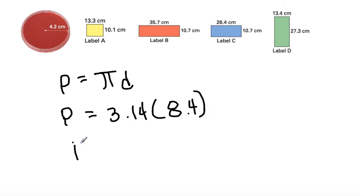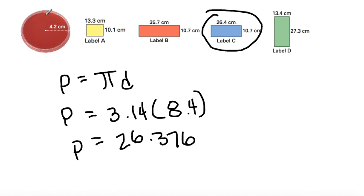So now we bust out my handy-dandy calculator. 3.14 times 8.4 equals 26.376 or 26.4. So what is the label that can be used for this top right here? Label C. 26.4 because that is the circumference of this circle.